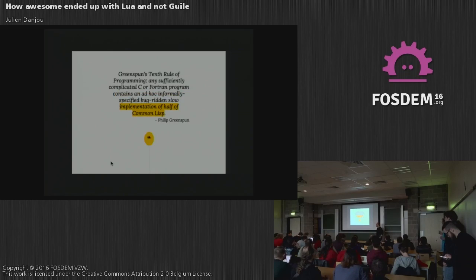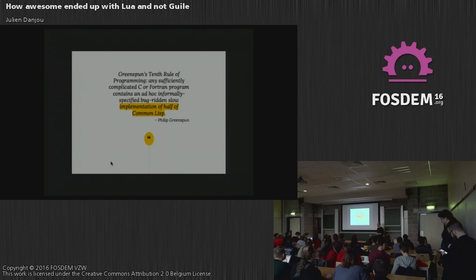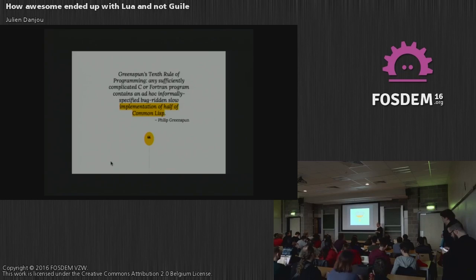One of the downsides of Lua is that you actually miss a lot of features you'd like to see, like object systems or a lot of other features. So I spent a lot of time writing things like an object system, which is very useful in a window manager because everything is seen as objects. I spent a lot of time writing things around Lua to complete the language, and that's where I stopped working on Awesome — I was spending more time writing a programming language on top of Lua than Awesome itself.